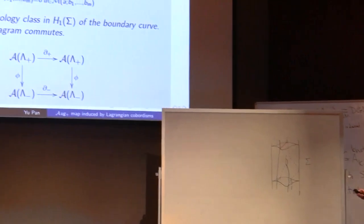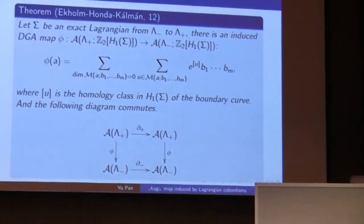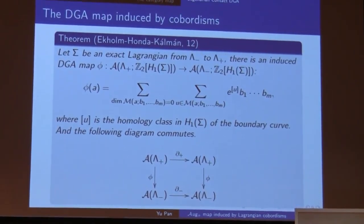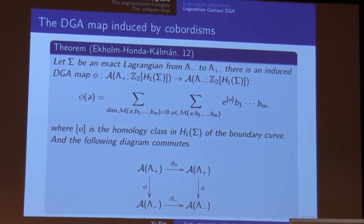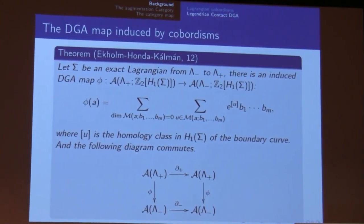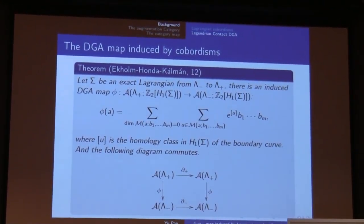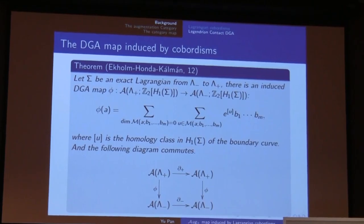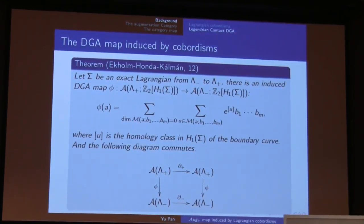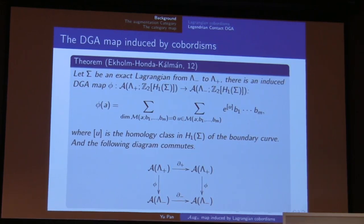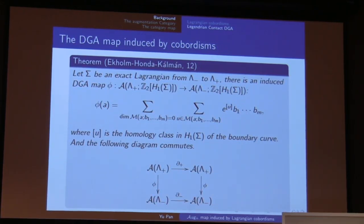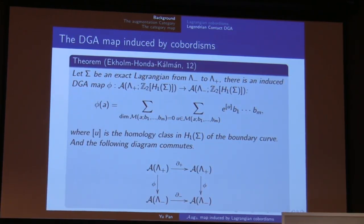Since this map is also defined over ℤ₂, it can be generalized to a more general field F, but we need a condition: the cobordism Σ must have a spin structure. Then the boundary knots inherit a induced spin structure from Σ, and the holomorphic disks can be defined with signs, and everything will be fine.